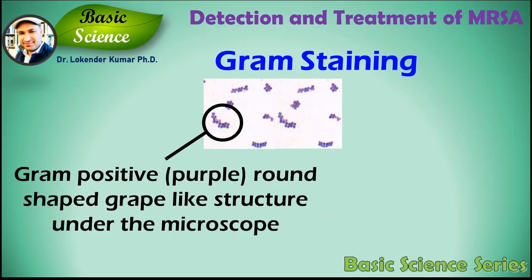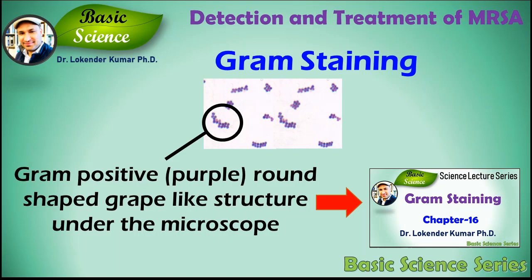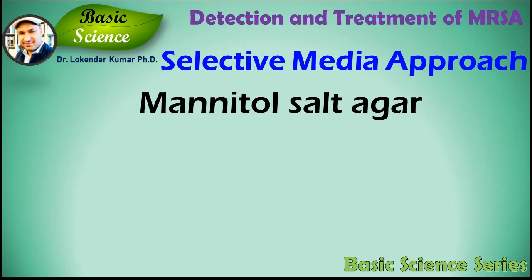Gram staining of the sample will be performed to check if there is a gram-positive, round-shaped, grape-like structure under the microscope. If yes, then we can say that the initial diagnosis for Staphylococcus aureus has been confirmed. To know in detail about gram staining, please refer to episode 16.